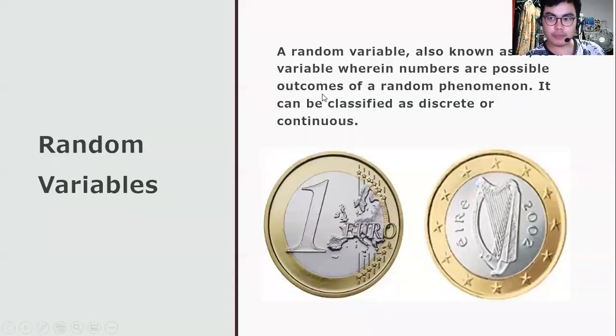When we say random variables, it is also known as X. It is a variable wherein numbers are possible outcomes of a random phenomenon. It can be classified as discrete or continuous. One example is the faces of the coin. Why is it considered a random variable? Because we can use this to toss coins to produce possible outcomes.